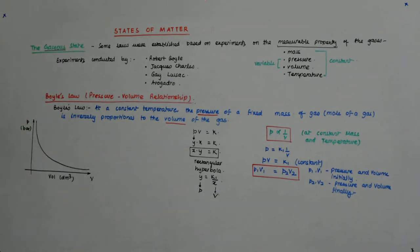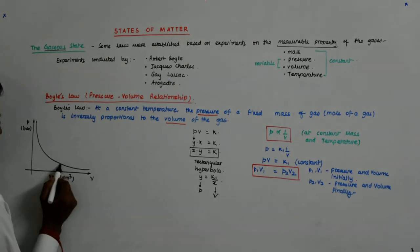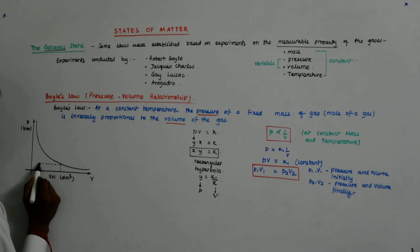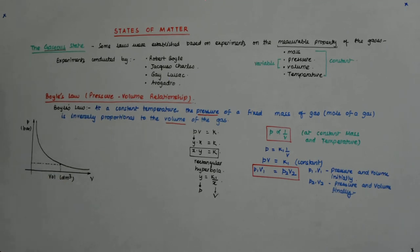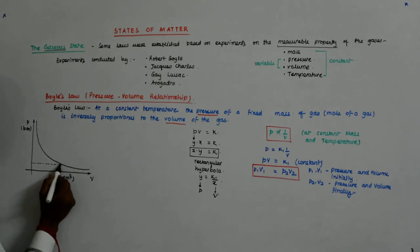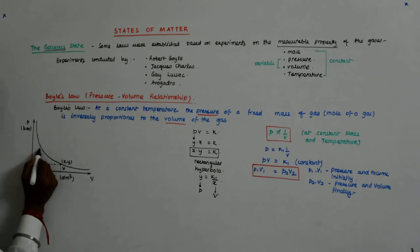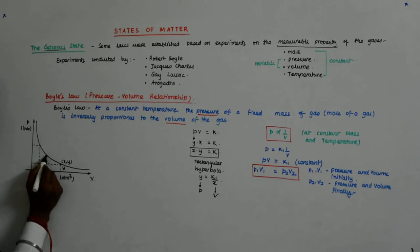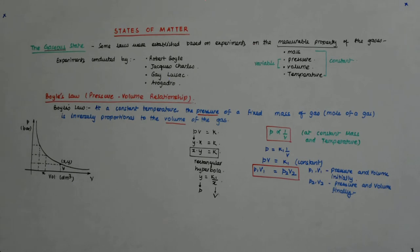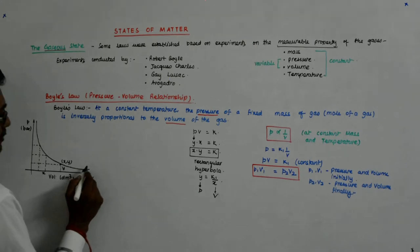The moment you see p times v equals a constant, you immediately understand it is a rectangular hyperbola. In a rectangular hyperbola, if you take any point and create a rectangle from it, the area is equal at every point. If a point is (x, y), then x times y is the constant, so all these areas are the same.